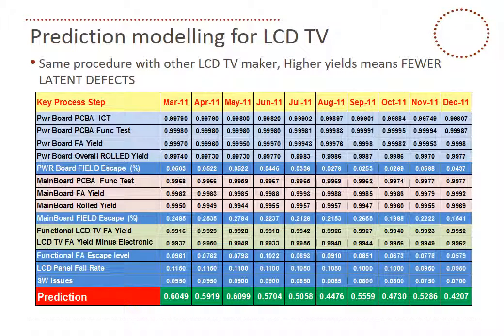If we do this with other LCD TV makers using the same model, and if they have higher yields — a better quality producer — we see fewer latent defects and predictions are much lower. The model will work as long as there is correlation in the defect types, which we establish initially. We then use the modeling and data mining to make very good predictions.